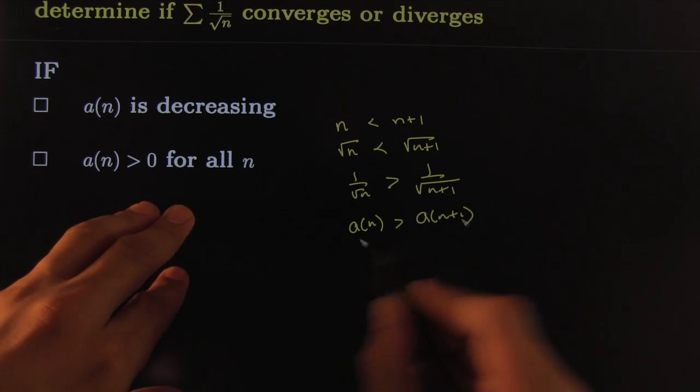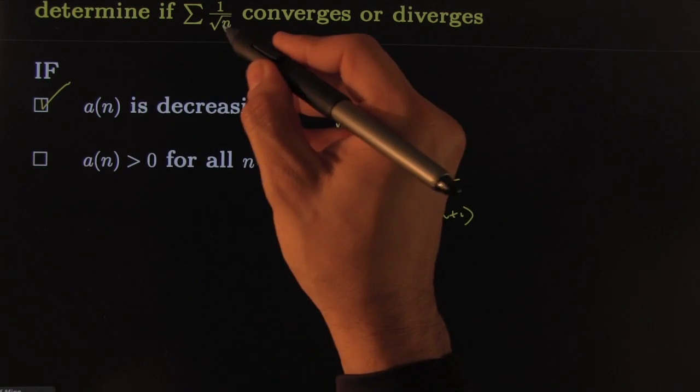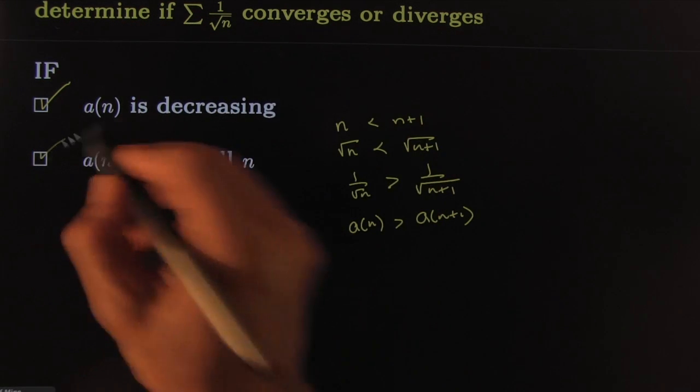That tells you a_n is bigger than a_(n+1), that tells you that is decreasing. Check they're all positive because of course n is positive, so the square root is positive.